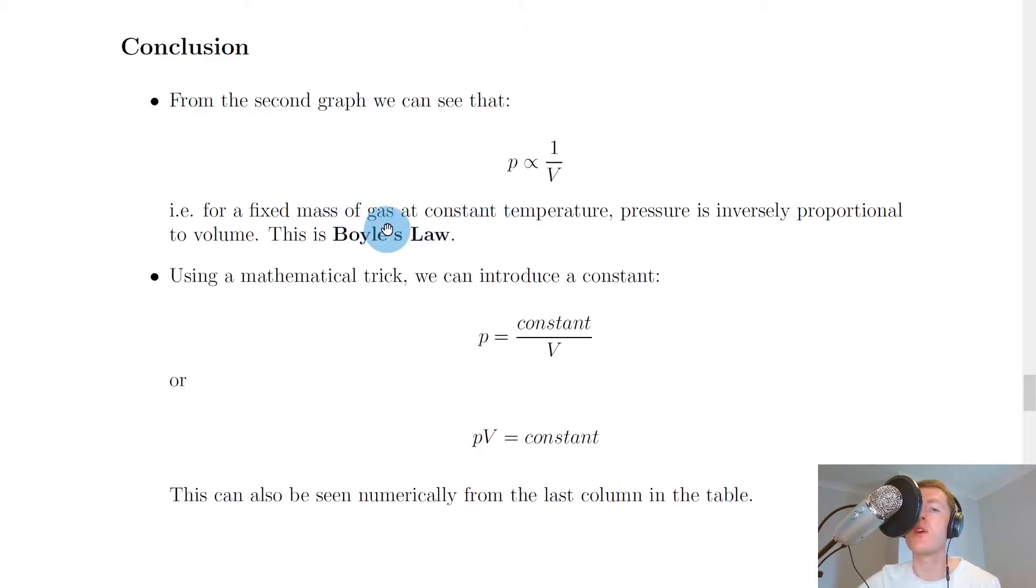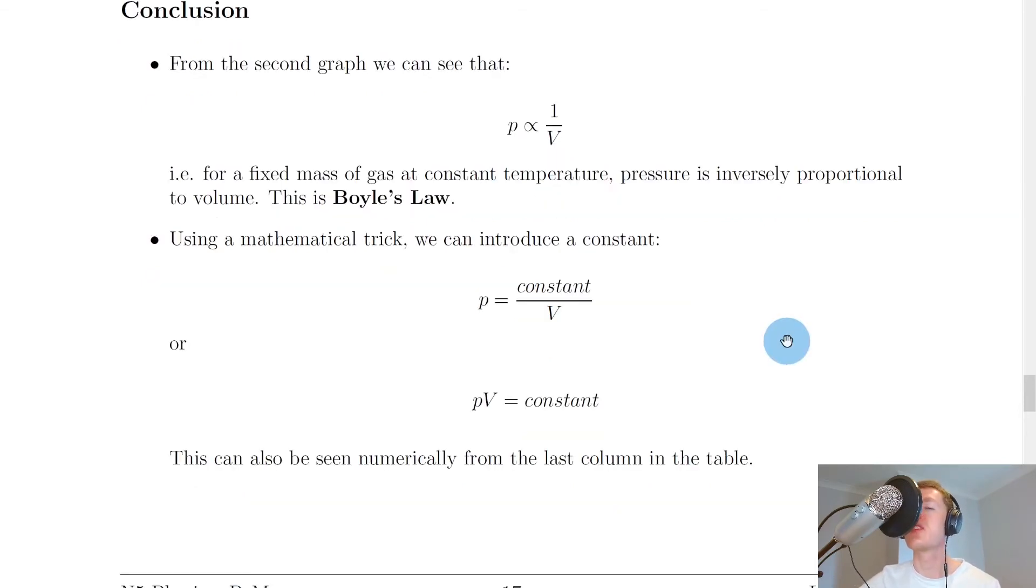So there we have Boyle's Law in word form, but that's it in symbol form there: P is directly proportional to 1 over V, which also means P is inversely proportional to V because of this 1 divided by the variable. What we're now going to do is see how we can take this Boyle's Law and form an equation from it.